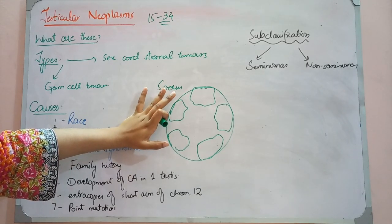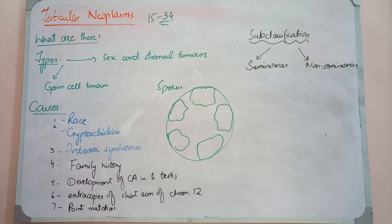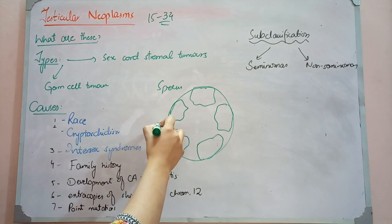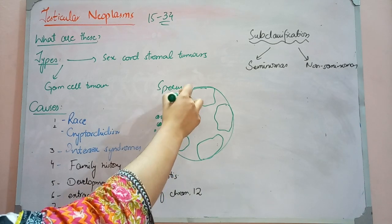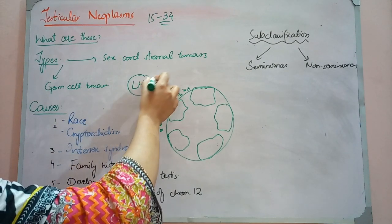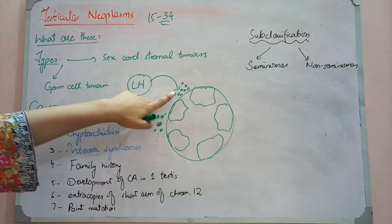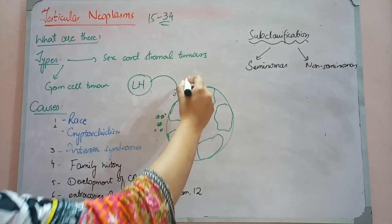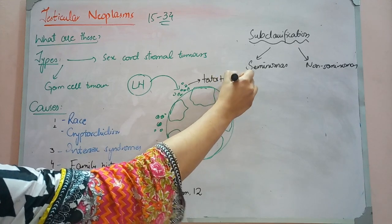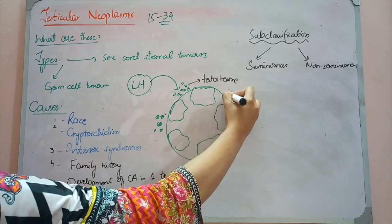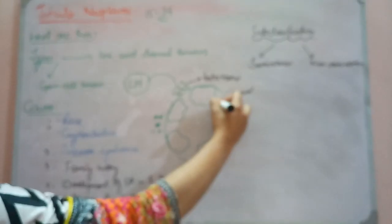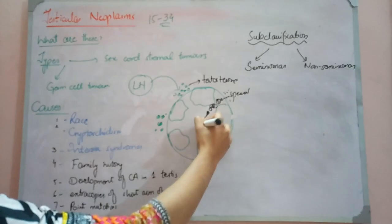In a cross section of the seminiferous tubule, there are cells called Sertoli cells. Outside the seminiferous tubule, we have Leydig cells. Leydig cells become active at puberty — the luteinizing hormone is released from the pituitary, and in response, the Leydig cells secrete testosterone. After puberty, testosterone drives the development of spermatogonias — immature stem cells — which become primary spermatocytes, then secondary spermatocytes, and finally mature spermatids.